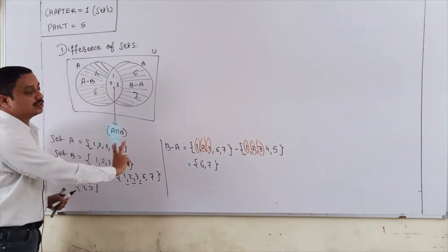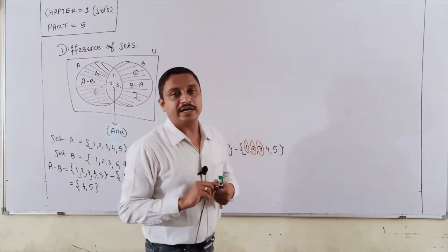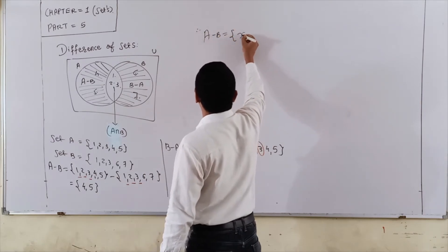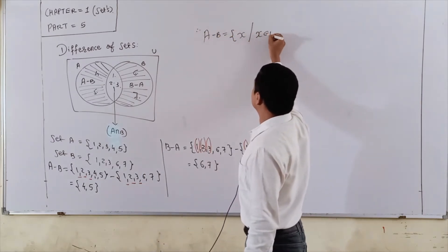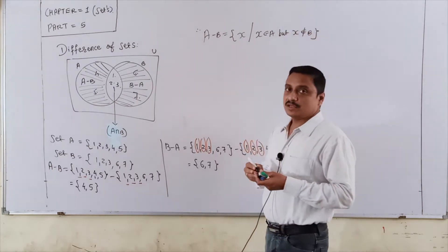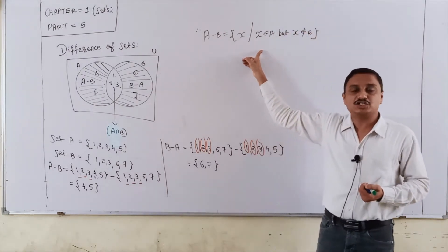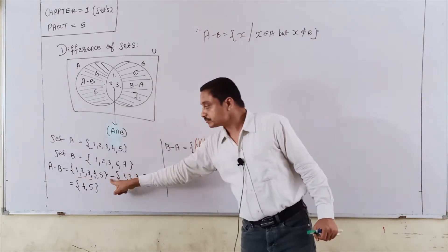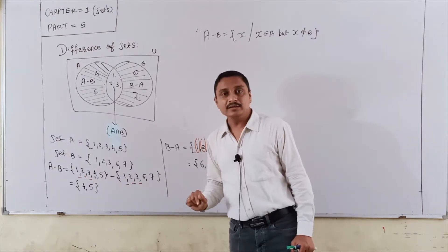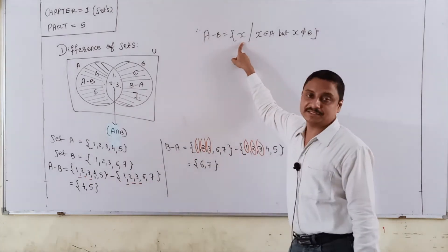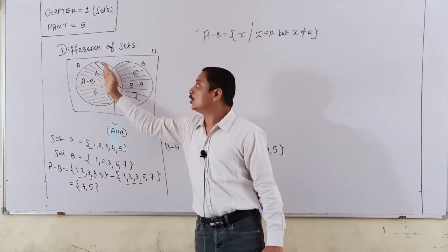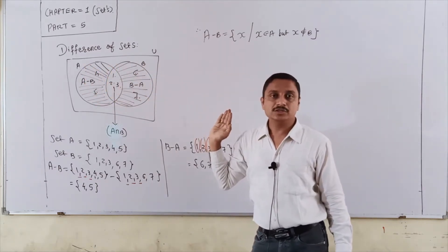So if you understood this example, now I show the definition. What is the definition? A minus B is the set of X such that X belongs to A but X never belongs to B. After that I show the meaning. These regions only indicate A but not B. So it is a difference set.